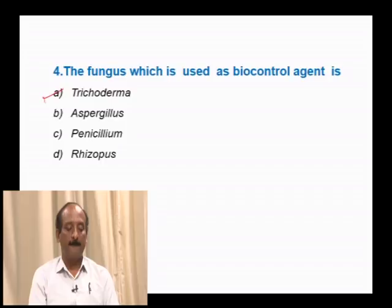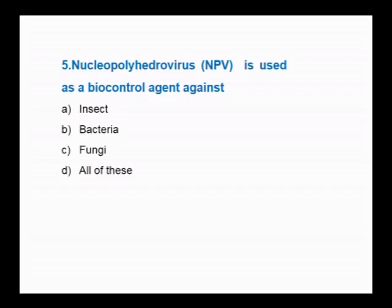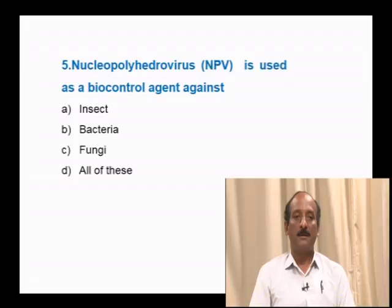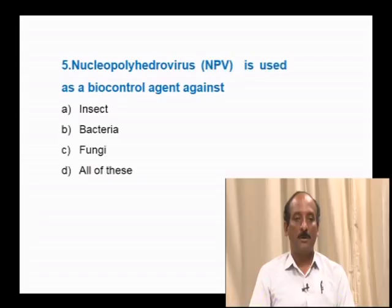Question number 5: Nucleopolyhedrovirus is used as a biocontrol agent against — insects, bacteria, fungi, all of these. Nucleopolyhedrovirus is commonly used to kill several insect pests and also arthropods. The correct answer is option A: insects.